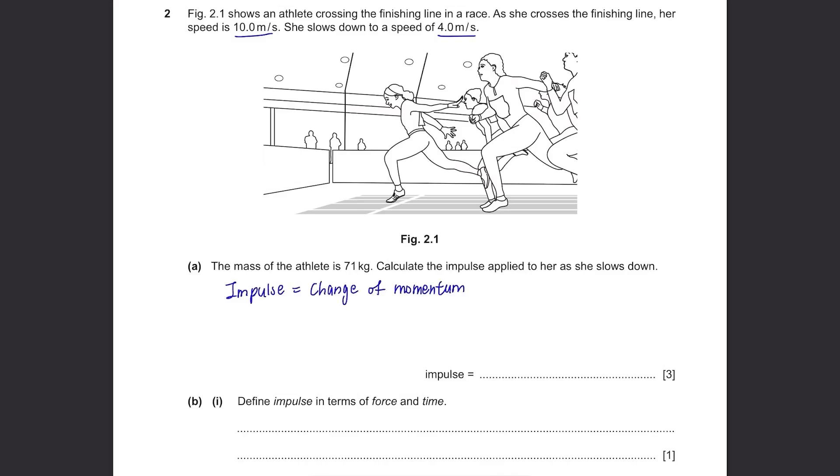Impulse equals change of momentum. This is the formula. You have to state this formula to get one mark. And what's the change of momentum? It's mass times the change in speed. So mass is 71 kilograms, so 71 times change in speed. It's 10 minus 4. If you calculate this, you get 426. You can round this up to 2 significant figures, so 430 Ns. Always remember the unit for impulse is Newton seconds.